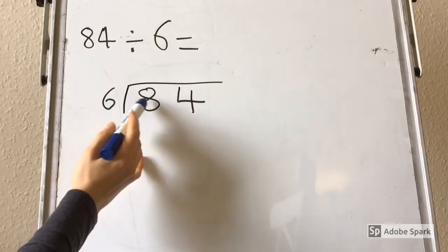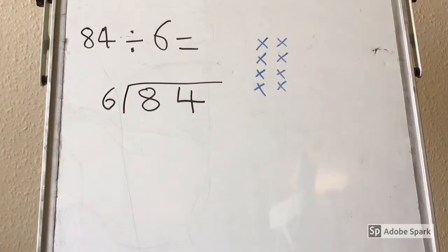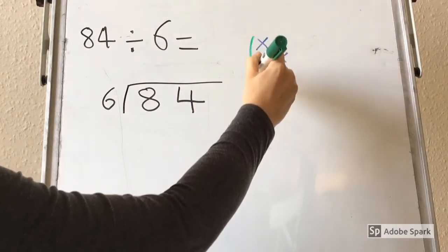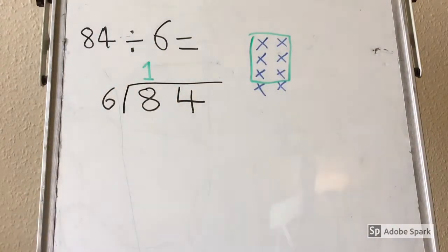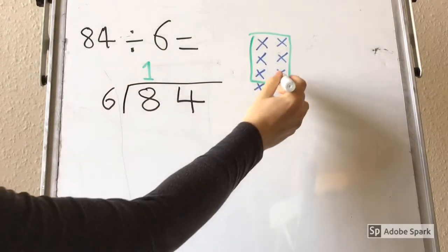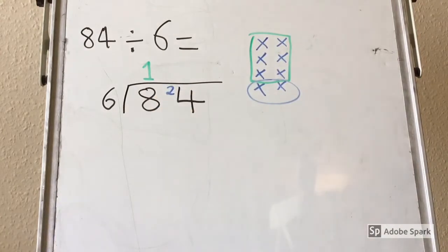When dividing 84 by 6, we will start by thinking about how many 6's go into 8. I know that 1 lot of 6 goes into 8, so I am going to write a 1 above my 8 on my bus stop. But 6 doesn't go perfectly into 8, there are 2 left over, so I am going to write a little 2 in front of my 4 here.